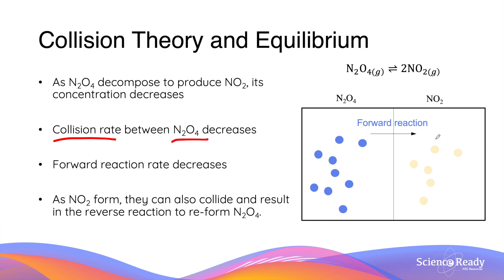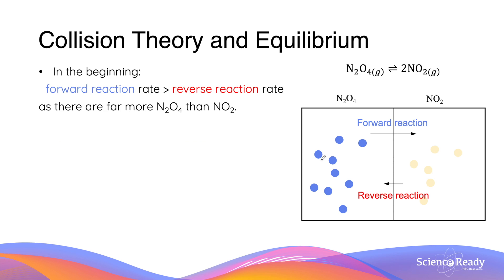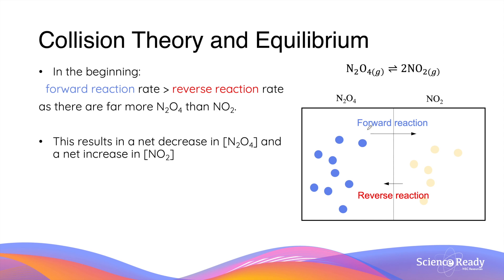The NO2 molecules formed by the forward reaction can collide to reform the reactant N2O4, so both forward and reverse reactions occur after NO2 begins to form. At the beginning of the reaction it is important to note that the forward reaction rate is greater than the reverse reaction rate — illustrated here by a much longer arrow for the forward reaction. This difference is simply due to the much larger amount of N2O4 at the beginning, giving a greater forward reaction rate.